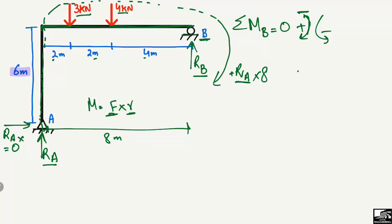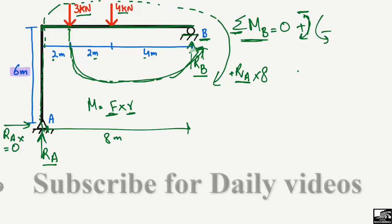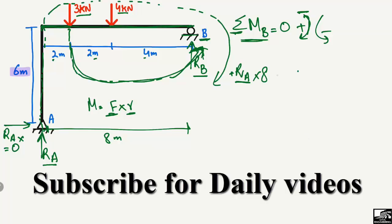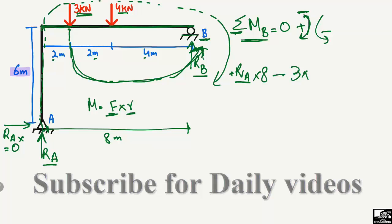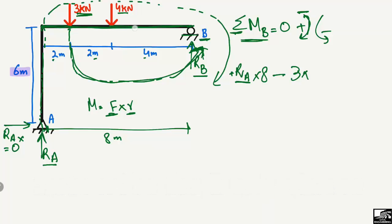The next force creating a moment about point B is the 3 kilonewton load. This acts downward and creates an anti-clockwise moment about point B, so it is taken as negative: minus 3, multiplied by its moment arm. The moment arm is the distance from that point to B, which is 2 meters plus 4 meters, totaling 6 meters.